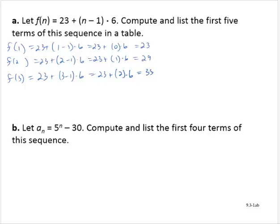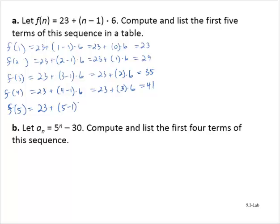That's 35. f of 4 is 23 plus 4 minus 1 times 6, which is 23 plus 3 times 6. 23 plus 18 is 41. And f of 5 is 23 plus 5 minus 1 times 6, so that's 23 plus 4 times 6, which is 47.